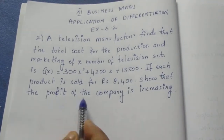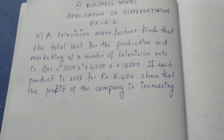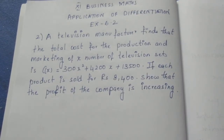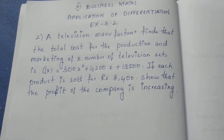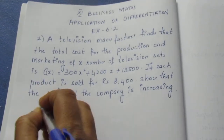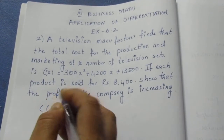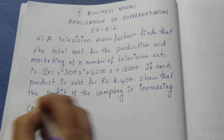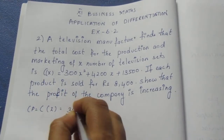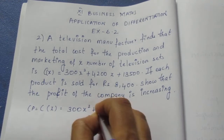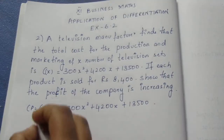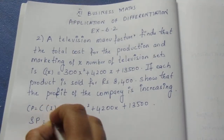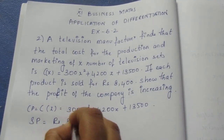Show that the profit of the company is increasing. We have CP, which is the cost price, and SP, which is the selling price. The cost function C of X is 300x squared plus 4200x plus 13500. SP is equal to Rs. 8400.